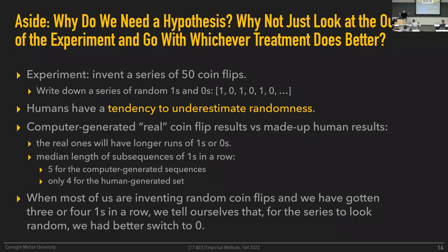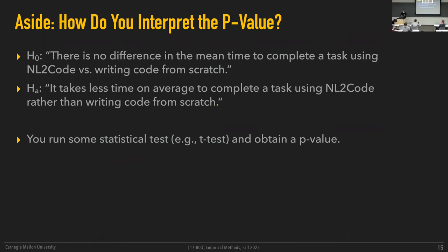I've done this exercise a few times and it works every time — it's like magic. The human-generated sequences tend to not really be random. This is a cute example for why we would rather do formal hypothesis testing and formally analyze and compare the data we're collecting, rather than just visually or intuitively interpreting it informally. Formal versus informal — it's because we're bad at estimating randomness.